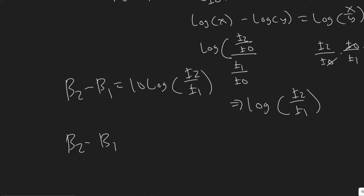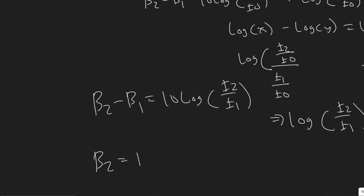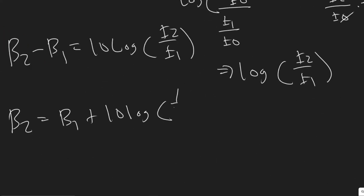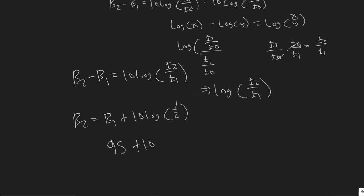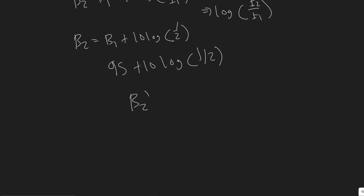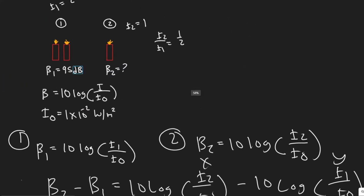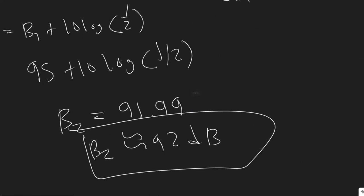So beta two minus beta one equals 10 log of one half, which means beta two equals beta one plus 10 log of one half. Beta one — the sound level for scenario one — was 95 decibels. So beta two equals 95 plus 10 log(1/2). Plugging that in, you get beta two equals approximately 91.99, so just 92 decibels. Even though it only dropped three decibels, that's your answer: 92 decibels.